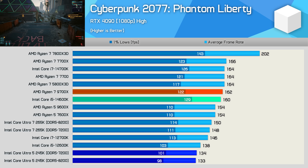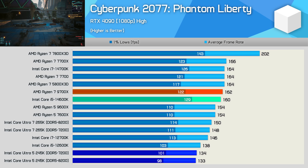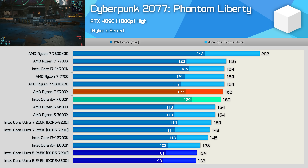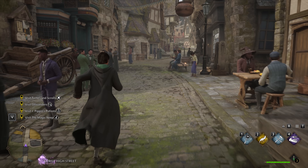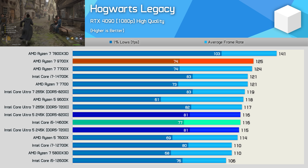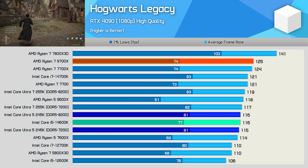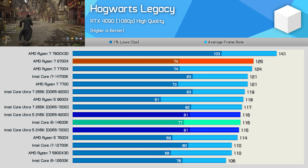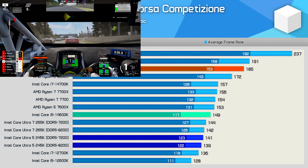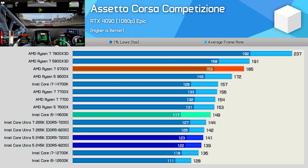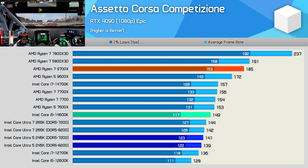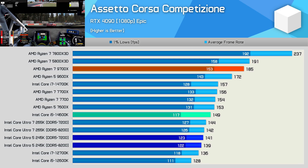Intel really needs to address the Cyberpunk performance, as it's at an unacceptable level for a next-generation product at this price. Hogwarts Legacy is better but not by much — the 245K only matches the 14600K, making it 8% slower than the 9700X. In Assetto Corsa Competizione, the 245K gets demolished: 5% slower than the 14600K and a massive 24% slower than the 9700X, delivering only 12700K-level performance.